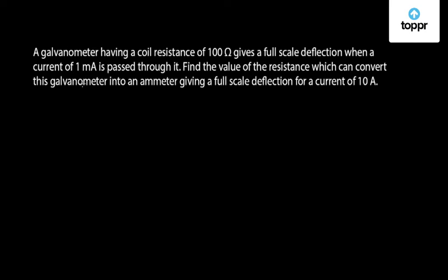Let us discuss a question on current electricity which came in JEE May 2016. A galvanometer having a coil resistance of 100 ohm gives a full scale deflection when a current of 1 mA is passed through it. Find the value of the resistance which can convert the galvanometer into an ammeter giving a full scale deflection for a current of 10 ampere.